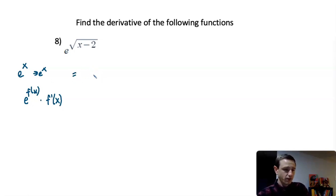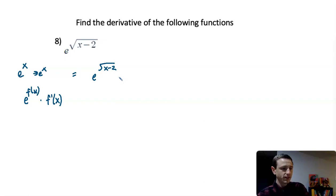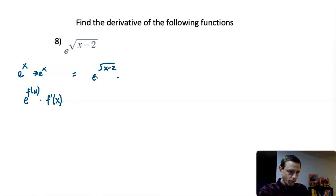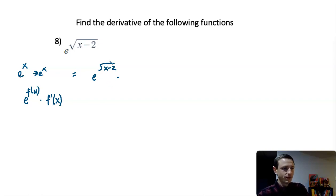In this case, the exponential part stays completely the same — e to the square root of x minus 2 — and then we multiply by the derivative of the square root of x minus 2, and that's where things get a little more complicated. We're using the chain rule with the exponential function, and then we're going to have to use the chain rule again to take the derivative of the square root of x minus 2. So a chain within a chain. This is e to the square root of x minus 2 — that's the e to the f(x) component.